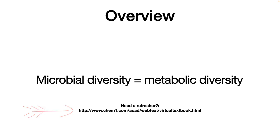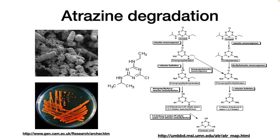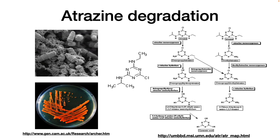Let's look at some examples. By now you are familiar with the microbes that use organic compounds, as we do. However, microbes can go far beyond the capability of mere eukaryotes. For example, some microbes can grow on compounds that we consider dangerous, such as atrazine, a potentially toxic herbicide and pollutant of groundwater. One very effective microbe at degrading it is Rhodococcus, shown on the left.